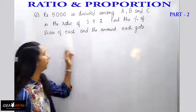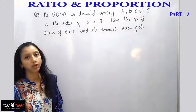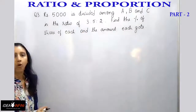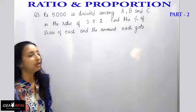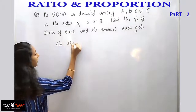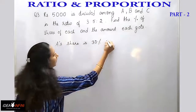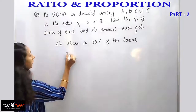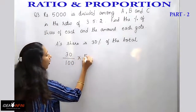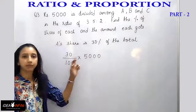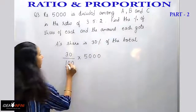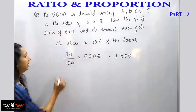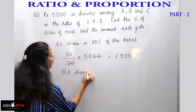Now for the second part: finding the actual amount each person gets. We already know A's percentage share is 30%, so A's share is 30% of the total amount of 5000. That is 30 by 100 into 5000. The zeros cancel and we get 5 into 3, which is 1500. So A's share is Rs 1500.